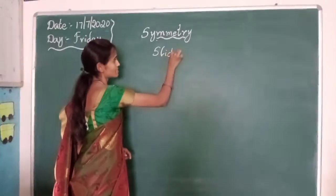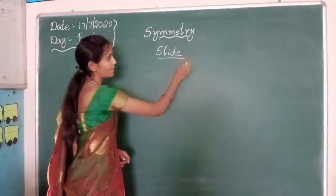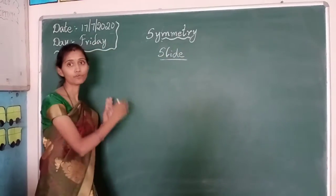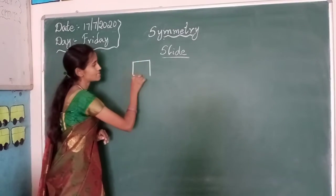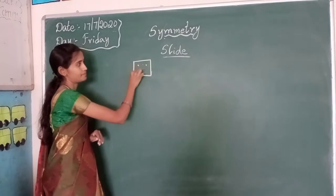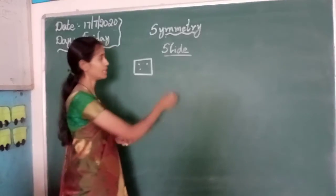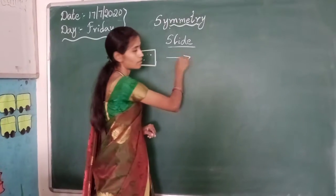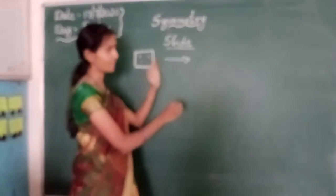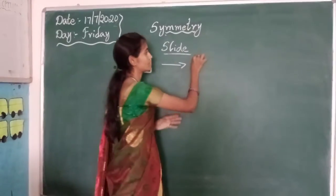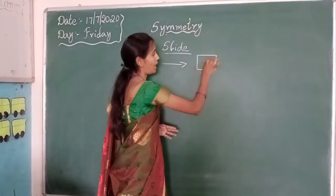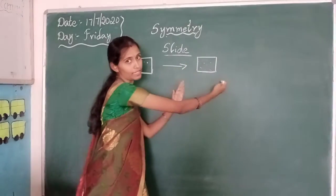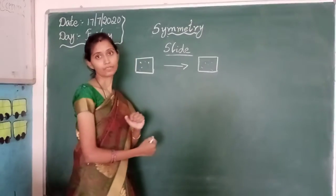That is, what is a slide? If an object moves from one place — for example, this is my object — if I move this object from one direction to another direction, from one place to another place in the same direction, this is called as slide.